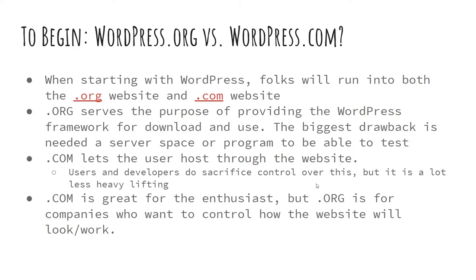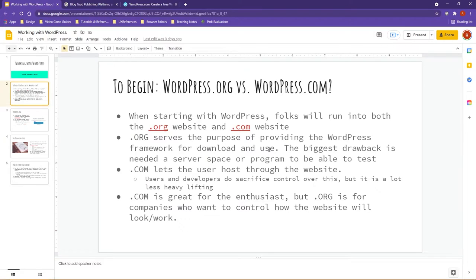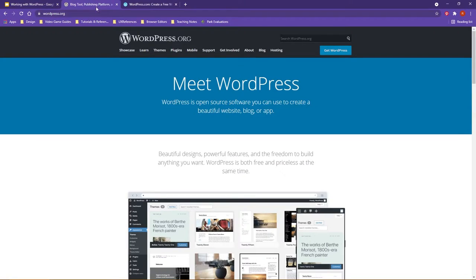WordPress.org on the other hand actually provides the framework and a lot of the tutorial and reference information that the community has built. It is where you would go if a company came to you from a freelance perspective, or if you were on a web development team and they said they want to make a website using a content management system. You would want to go to the wordpress.org site to download WordPress.